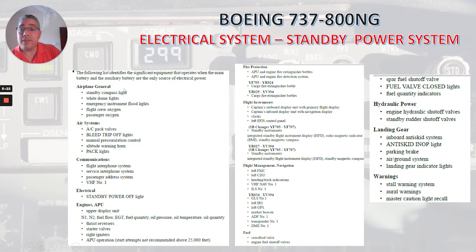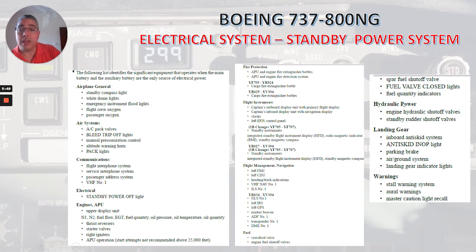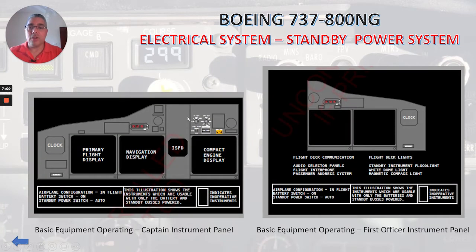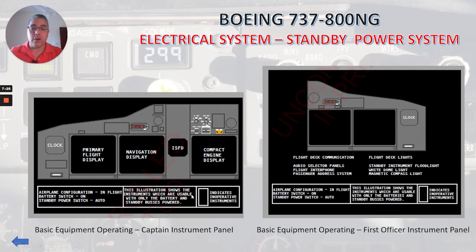Here you have a list that identifies the significant equipment that operates when the main battery and auxiliary battery are the only source of electrical power. Please feel free to go through each of them and read what we have available. In these pictures, we can see the basic equipment operating for the captain instrument panel and for the first officer instrument panel. The condition is the same for both: airplane in flight, battery switch on, and standby power switch auto.